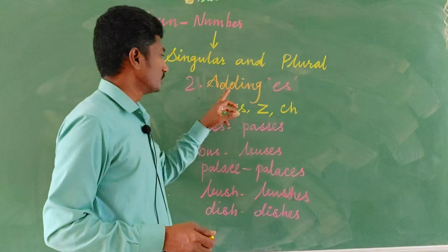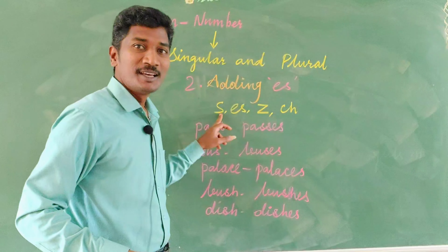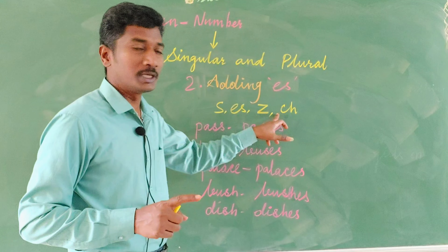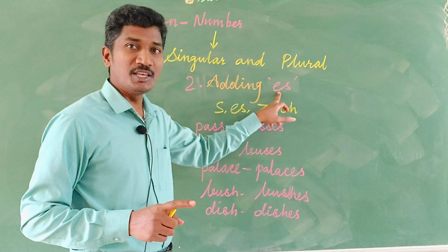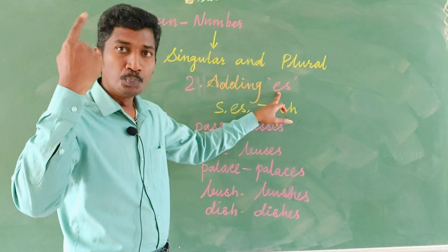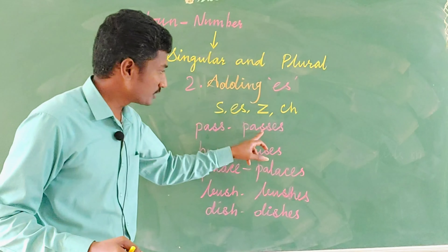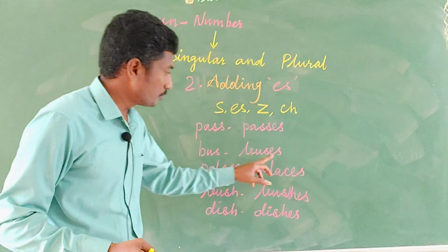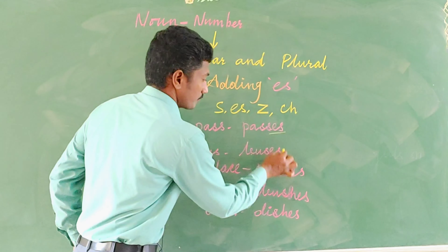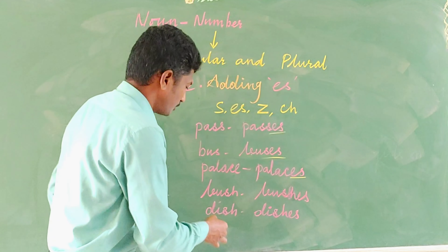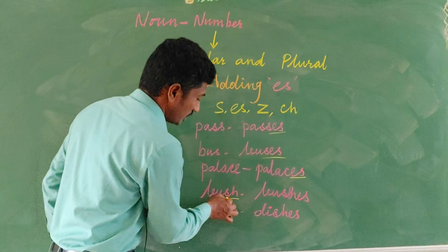The second rule talks about singulars which are ending in 's', 'z', 'sh', and 'ch'. If they are ending in these, when we add 'es', they become plurals. For example, pass → passes, bus → buses, and palace → palaces. So it is already ending in 'e', we just add 's'. Bush — ending in 'sh' — so we add 'es'.